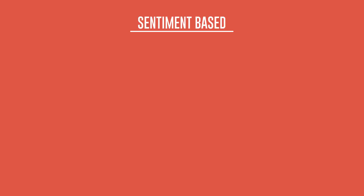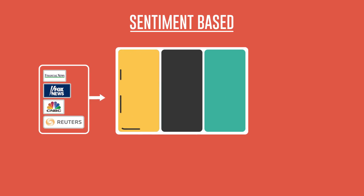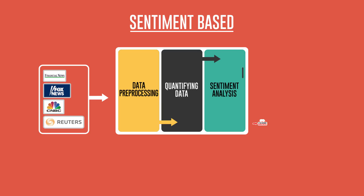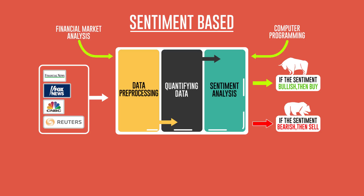Sentiment-based: ever tried trading based on sentiment? Well, this strategy can do it for you. A news-based algorithmic trading system is usually hooked to news wires, automatically generating trade signals depending on how actual data turns out in comparison to the market consensus or the previous data. As you've probably guessed, it takes a solid background in financial market analysis and computer programming to be able to design sophisticated trading algorithms.